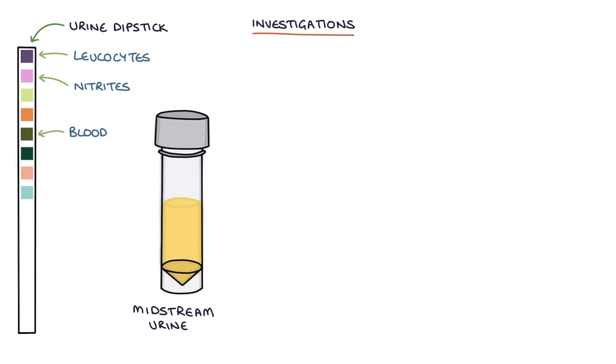A midstream urine or MSU can be sent to the lab for microscopy, culture and sensitivity testing and this is essential to establish the causative organism. The sample should ideally be collected before starting antibiotics.